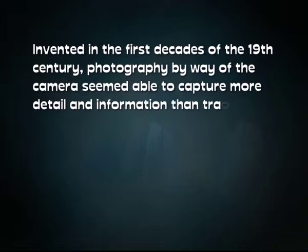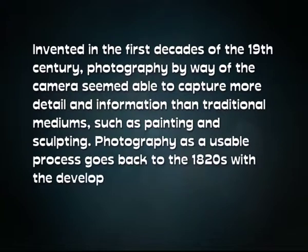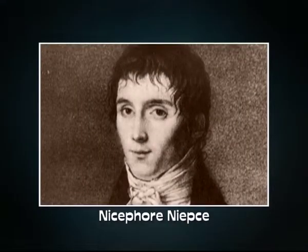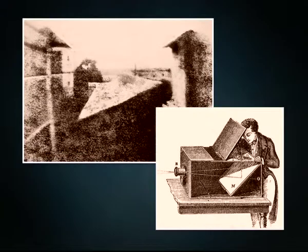Photography as a usable process goes back to the 1820s with the development of chemical photography. Invented in the first decades of the 19th century, photography by way of the camera seemed able to capture more detail and information than traditional mediums such as painting and sculpting. The first permanent photo etching was an image produced in 1822 by French inventor Nicéphore Niépce, but it was destroyed by a later attempt to duplicate it. Niépce was successful again in 1825, and made the first permanent photograph from nature — his view from the window at Le Gras — with a camera obscura in 1826. Because his photographs took so long to expose — eight hours — he sought to find a new process.